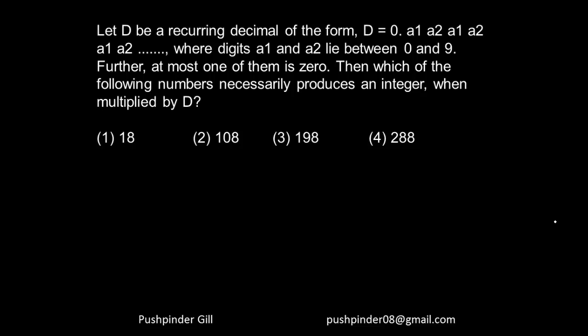So let d be a recurring decimal of the form d = 0.a1a2a1a2a1a2, where a1 and a2 lie between 0 and 9, further at most one of them is 0. Then which of the following numbers necessarily produces an integer when multiplied by d?